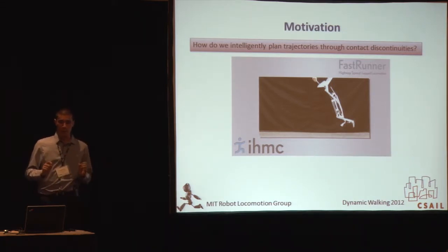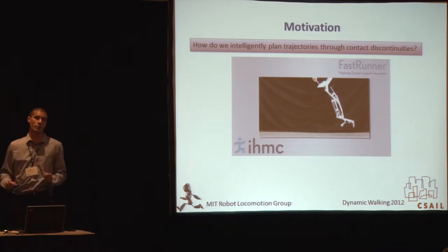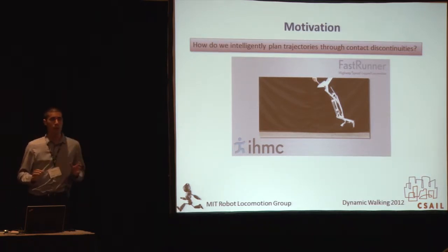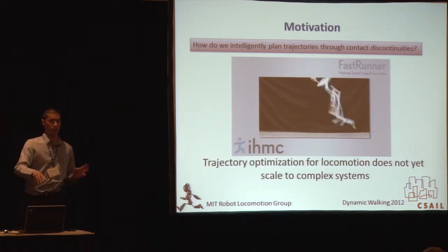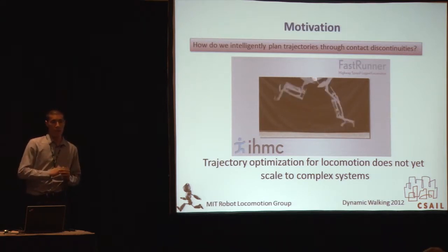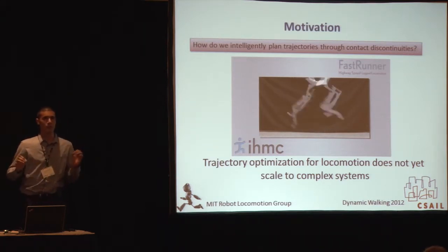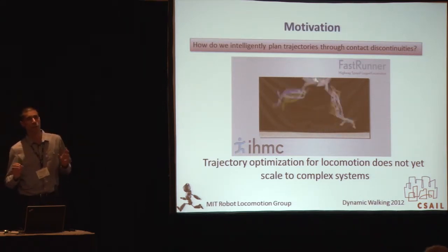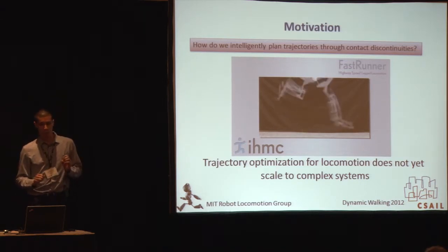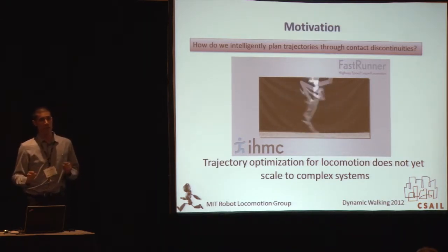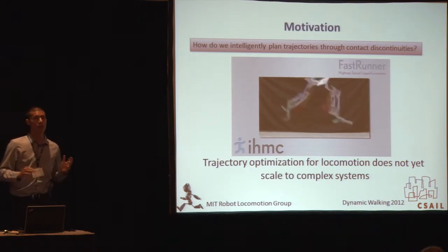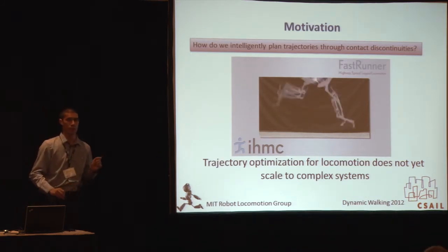The question is: how do we intentionally plan trajectories through contact discontinuities? We thought we knew, and then about a year ago we were presented with this fashion robot from the folks at IHMC. This is a very complicated problem, and trajectory optimization as it stands right now does not really scale to systems of this sort of complexity.